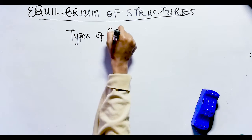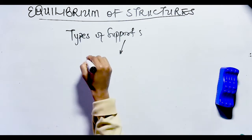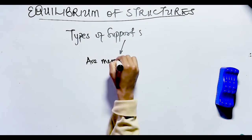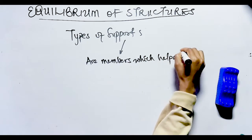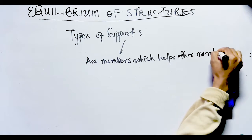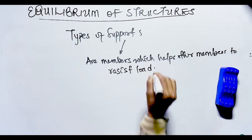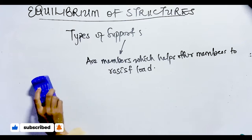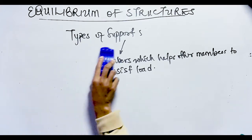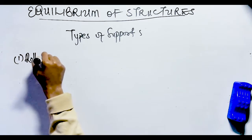Before we go into the types of supports, we first need to know what supports are. A support in a structure is simply a member which helps other members to resist loads. The function of a support is to prevent the movement of a structure when a load is applied, by exerting opposing forces that neutralize the effects of the load, thereby keeping the structure in equilibrium.